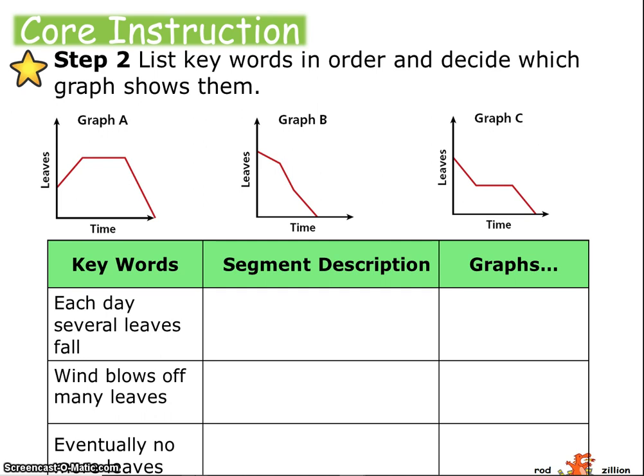That means in the graph, I should expect that the graph should never be horizontal. Each day several leaves fall, so there's never an occasion where no leaves fall. Graph B shows that there's never any horizontal parts. So we'll keep that in mind.